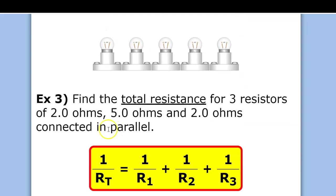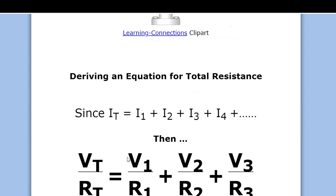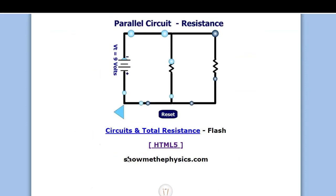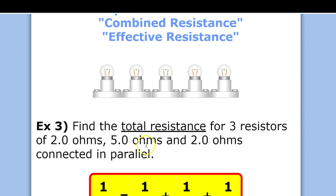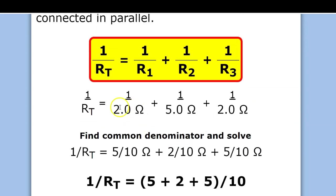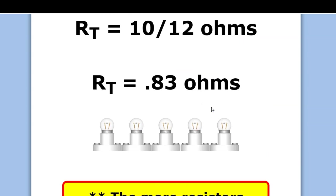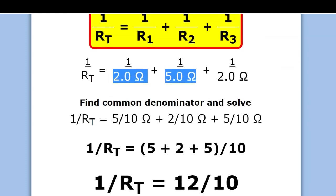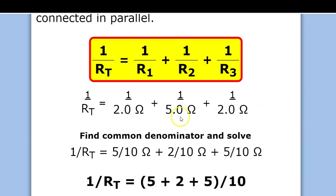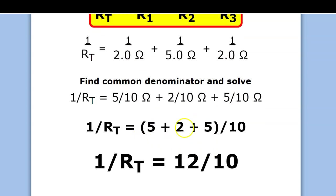Find the total resistance of three resistors of 2, 5, and 2 ohms. Using the equation, we get 1 over 2 plus 1 over 5 plus 1 over 2. The common denominator of 2 and 5 is 10, so it's 5 over 10 plus 2 over 10 plus 5 over 10. Together, that's 12 over 10.